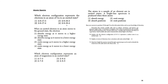Which electron configuration represents an atom of gallium in an excited state? It's probably choice two — you'd need to look it up. When an excited electron in an atom moves back to the ground state, the electron is moving to a lower energy state, so it emits energy. The answer is four.